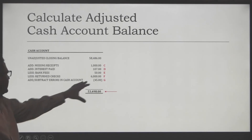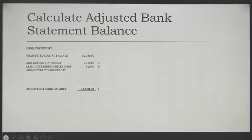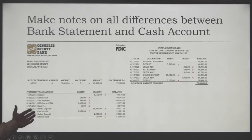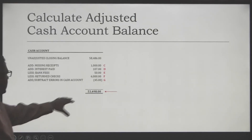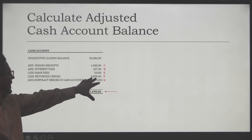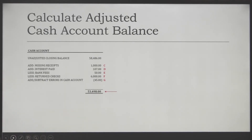The next item is $6,000 — that's a return check. Looking back at the bank statement, NSF check number 2748 hit our account. One of our customers sent us a check for $6,000, we deposited it, and the check was returned because the customer didn't have sufficient funds. So the bank reduced that amount from the ending balance, and now we need to reduce the amount of cash we're showing in the cash account detail by $6,000.